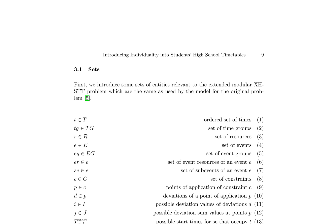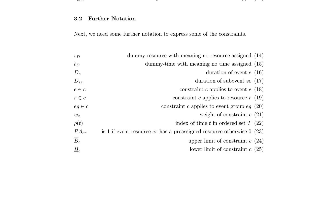The authors define further notation to express constraints, including a dummy resource with no resource assigned, a dummy time with no time assigned, D_R_E (the duration of event E), D_SE (the duration of sub-event SE), indicators for whether a constraint applies to an event E, resource R, or event group EG, W_C (the weight of constraint C), Rho_T (the index of time T in the ordered set T), P_R (a binary indicator of whether event resource R has a pre-assigned resource), and B_C (the upper and lower limits of constraints). These sets and notations are essential in formulating the constraints and objective functions of the extended modular X-HSTT problem.